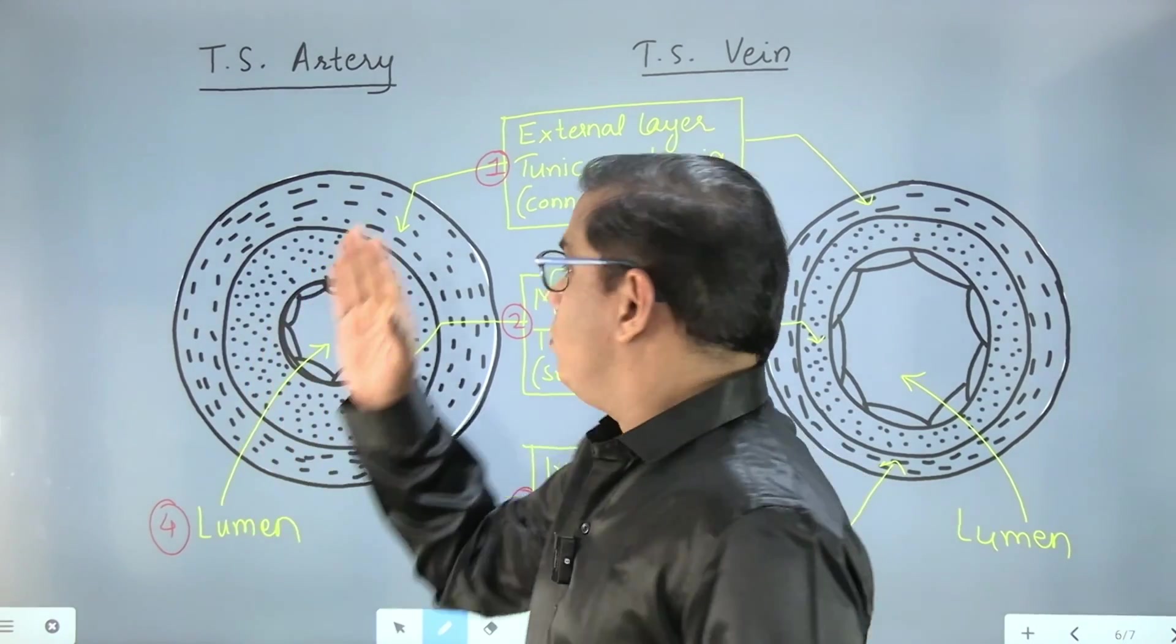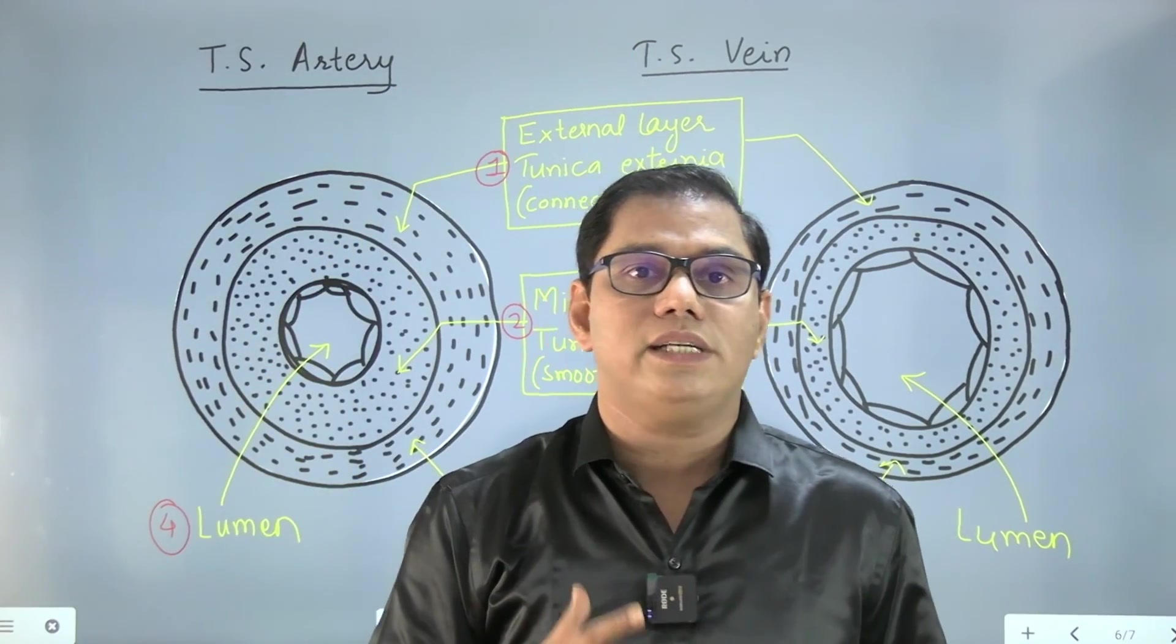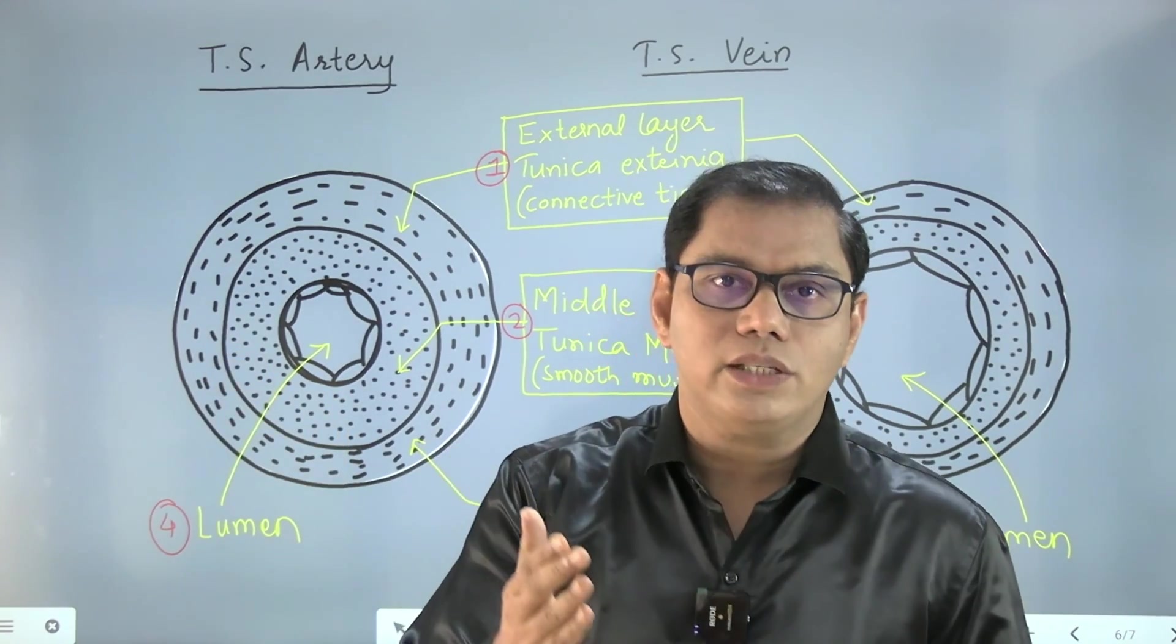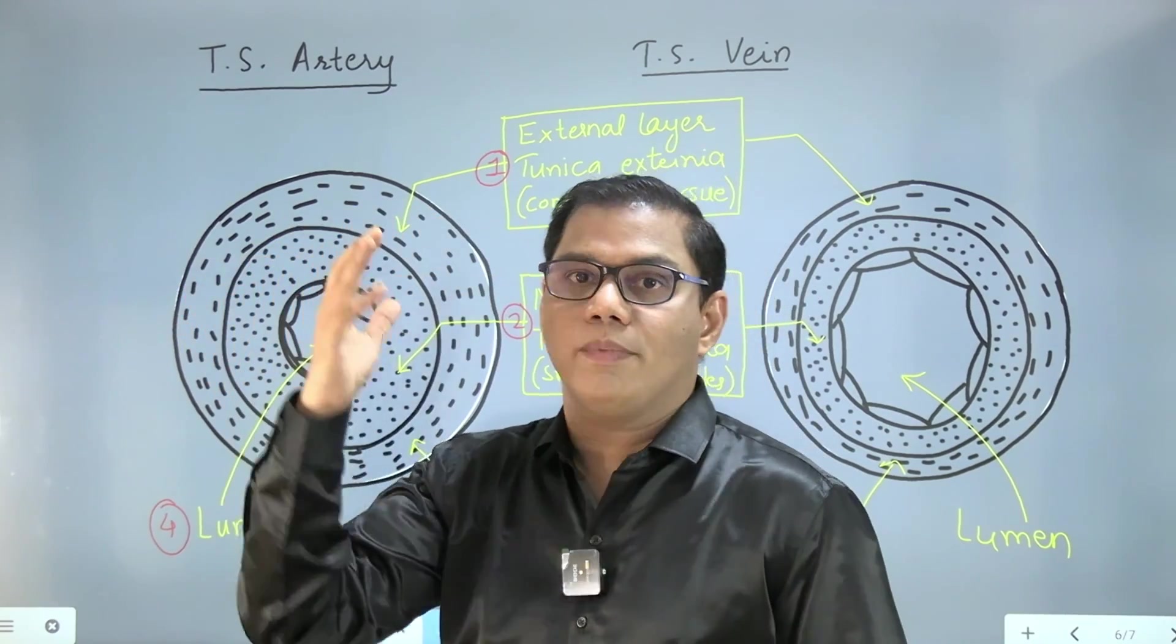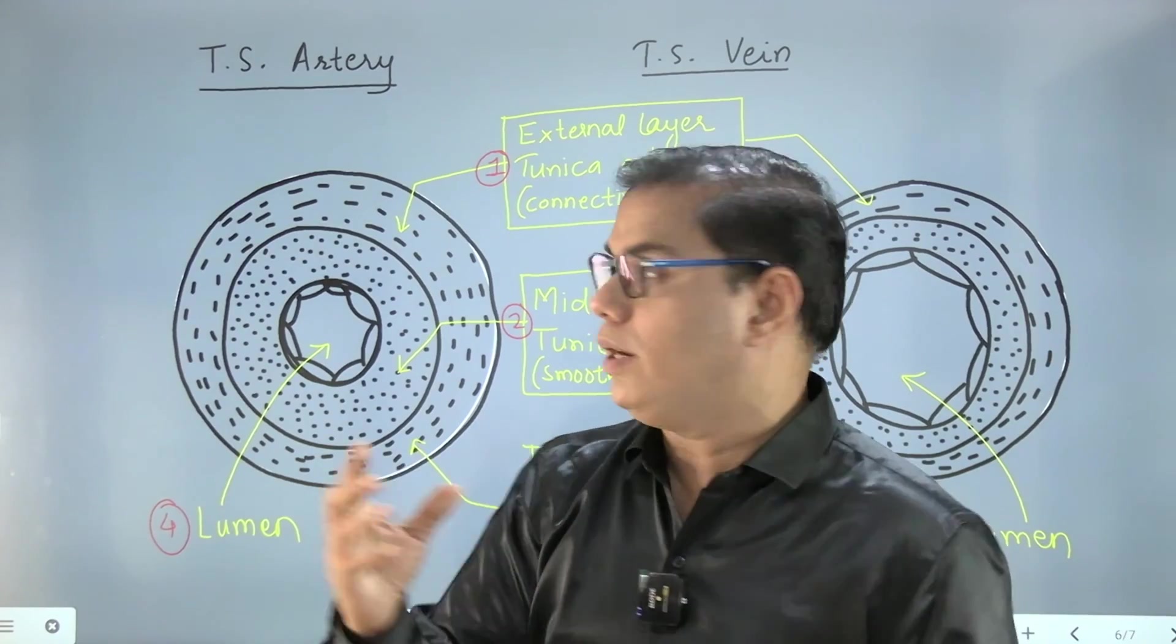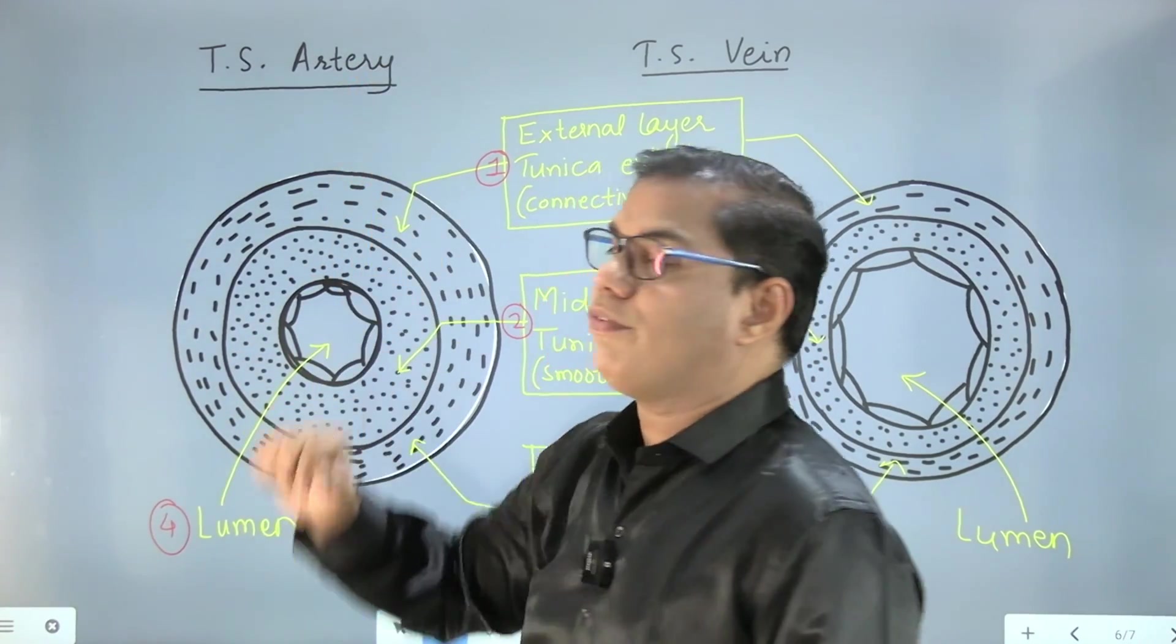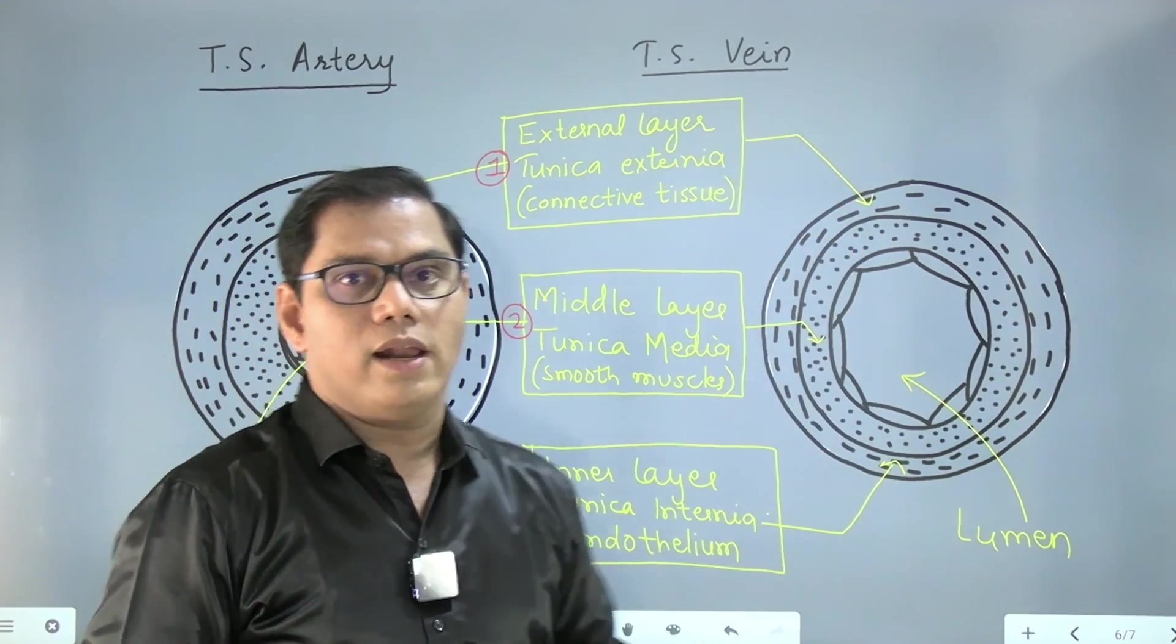Not only that, most of the time this question is asked in a form of differentiation also. You can differentiate on the basis of the knowledge which you have gained while drawing this diagram. Let's say they generally ask you the size of the lumen. So lumen is narrow or smaller in case of artery, and it is wider or bigger in case of the vein.